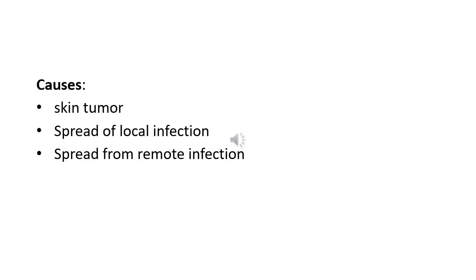The most important causes of preseptal cellulitis: (A) skin trauma such as laceration or insect bite — the causative organisms are usually Staphylococcus aureus or Streptococcus pyogenes; (B) spread from local infections such as acute chalazion, dacryocystitis, or sinusitis; (C) from a remote infection of the upper respiratory tract or middle ear by hematogenous spread.